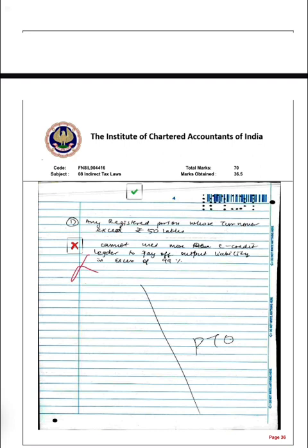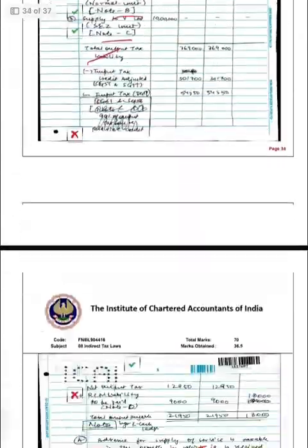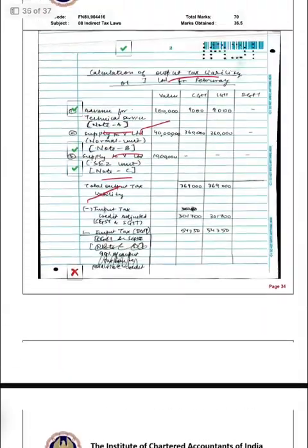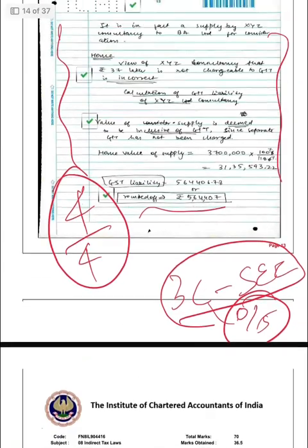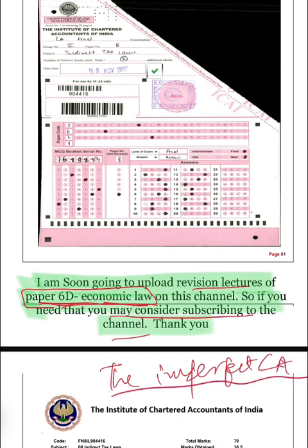In total in the descriptive part, I got 8.5 marks out of 40, which I think was a decent score given all the mistakes I can see. I was quite happy that they gave 8.5 marks, and that was all from my IDT side. I have now shared all my certified copies. If you have any queries, you can ask me on Telegram — my page is 'The Imperfect CA'. All my PDFs are uploaded there. Thank you so much for watching.